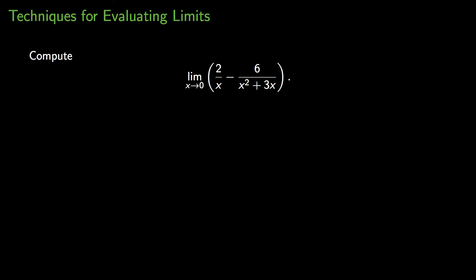If we were to try to substitute x equals 0, you would get 2 over 0, which is undefined, minus the 6 over 0 on the right, which is also undefined.